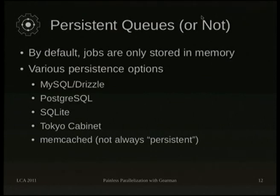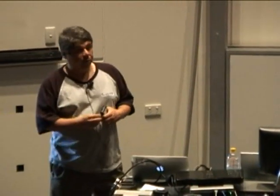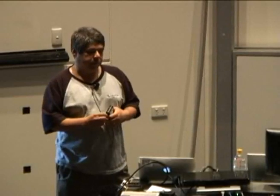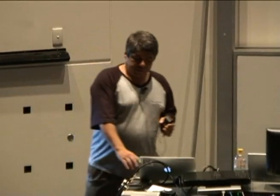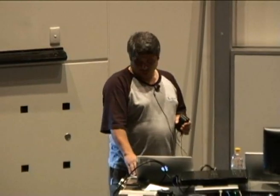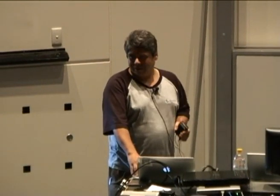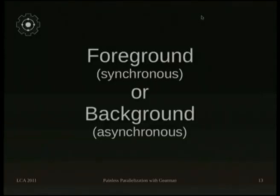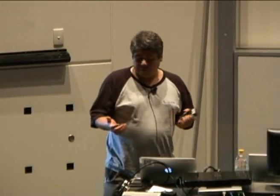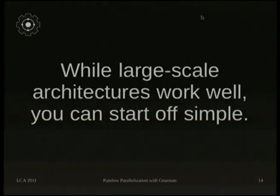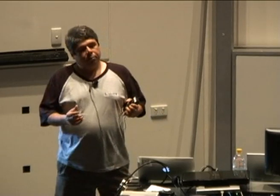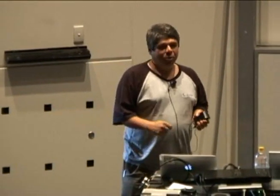For example, GearMan gives you persistent queues or not. By default it's in-memory only, but you can choose your various persistence options — off-the-shelf databases like MySQL and Drizzle, Tokyo Cabinet, Memcache, and there's probably code around for just about any kind of data store you want, or you can write your own. You can work in the foreground synchronously, or in the background asynchronously. Large-scale applications work well, but it's very easy to start off simple — just install GearMan, plug in your code, and off you go. One worker or 150 workers, no problem.